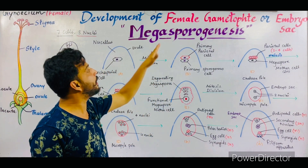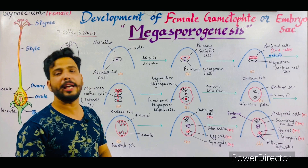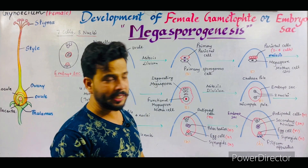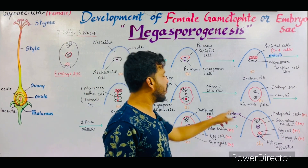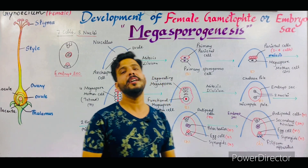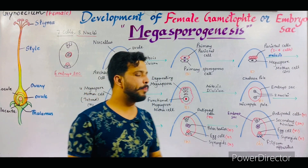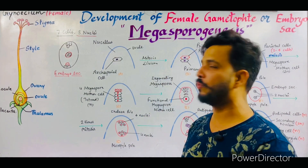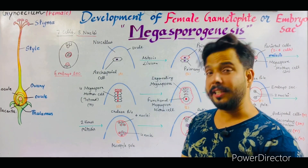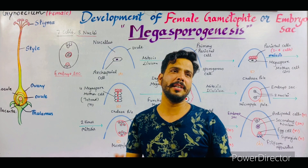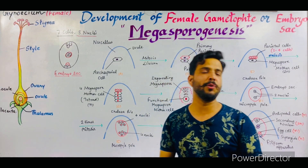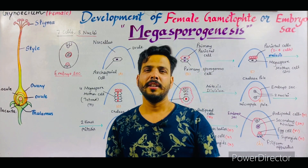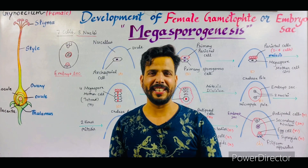So it was the complete formation of the embryo sac — the development of female gametophyte. The process of megasporogenesis is completed by the formation of the embryo sac inside the ovule. I think the topic is clear to you. If you want to ask any question, query, or suggestion, you may ask in the comment section. Thanks for watching, have a good day.